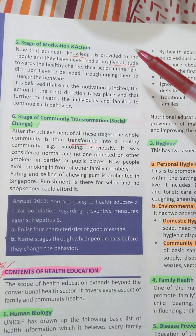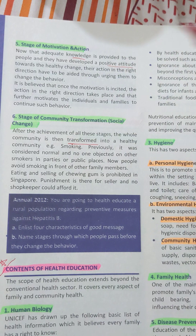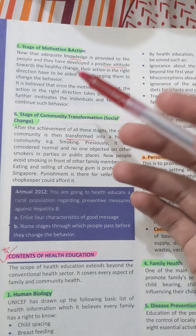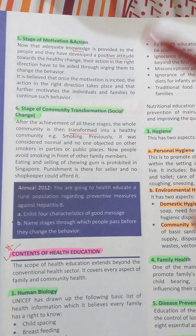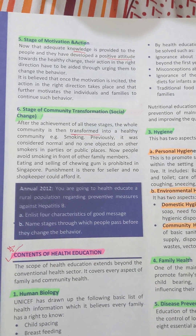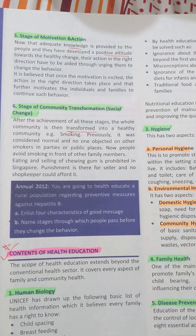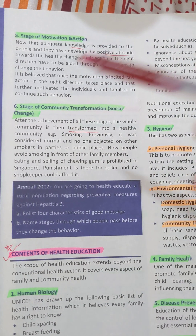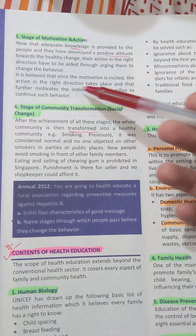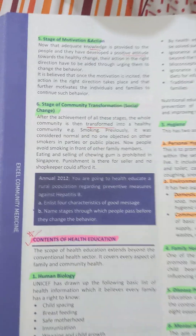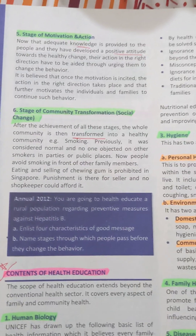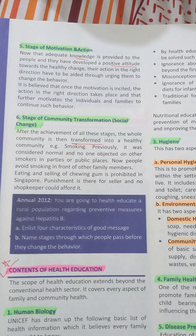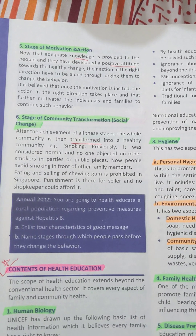Stage five is the stage of motivation and action. Now that enough knowledge has been provided to the people and they have developed a positive attitude towards healthy change, their actions in the right direction have to be aided by urging them to change their behavior. We have to tell them the positive effects — for example, how maintaining a good healthy diet and exercising properly can help them attain a good physique. Once the motivation is incited, action in the right direction takes place, which further motivates individuals and families to continue such behavior.